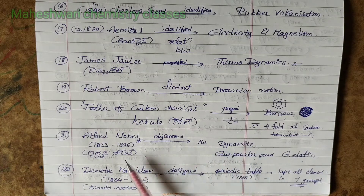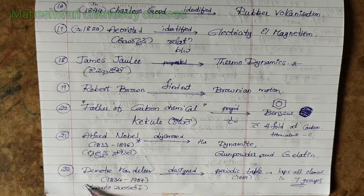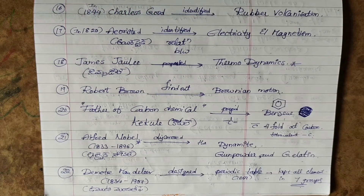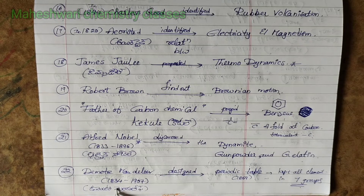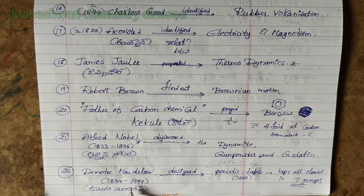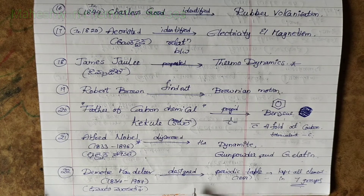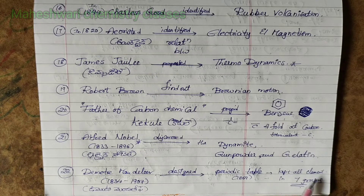This is the Alfred Nobel story. Next, 22nd point: Dimitri Mendeleev, time duration 1834 to 1907. Mendeleev designed the periodic table and kept all elements in 7 groups.